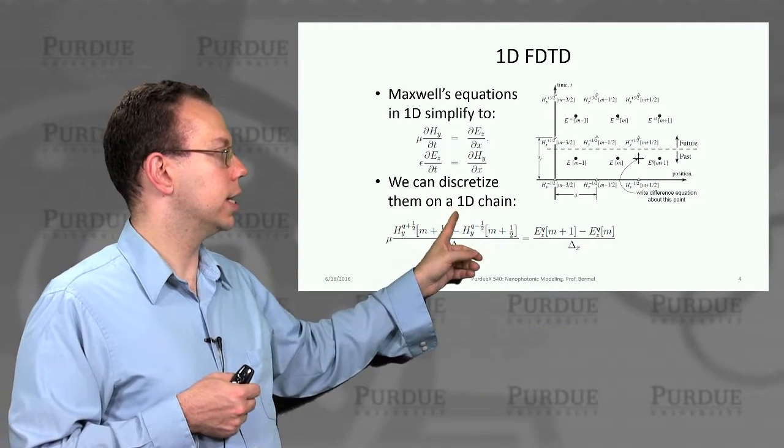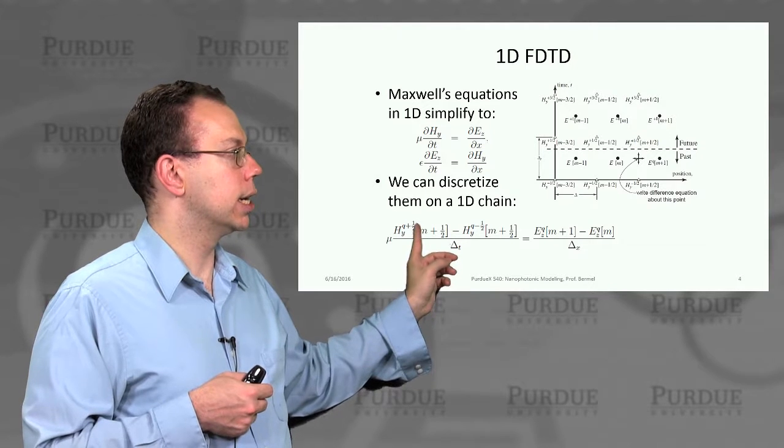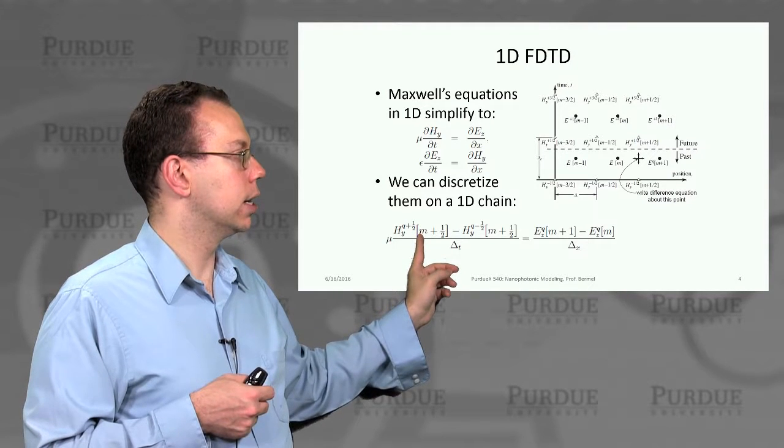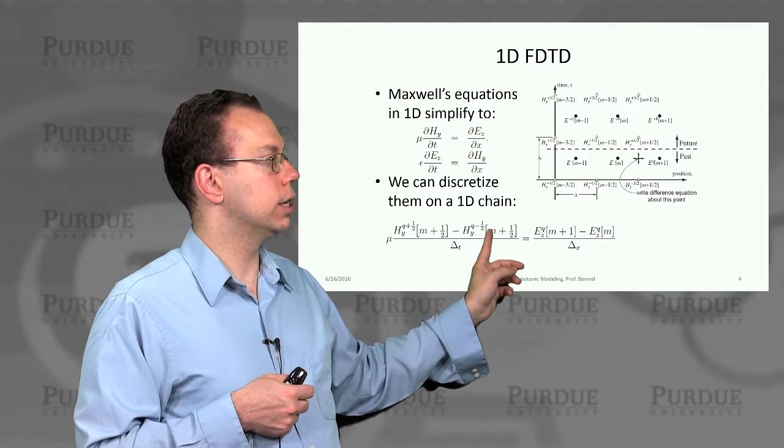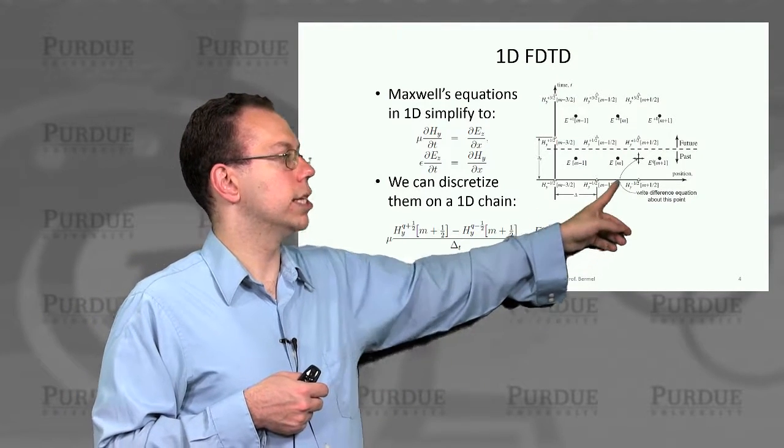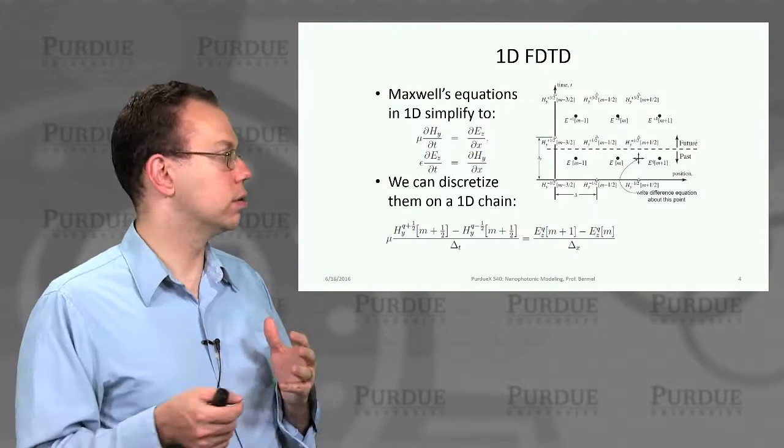And then this allows you to propagate in time for the H_y. And so then you actually end up with equations for the updated H_y at a time which we write as q plus 1 half as a function of the original H fields at q minus 1 half. And, of course, if you go back far enough, presumably the H fields will be 0.